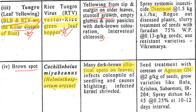Now let's talk about brown spot, caused by Helminthosporium oryzae. The important identification feature is elliptical spots. Agro-san is not a preferred method. You can use resistant varieties like Bala, Krishna, and Sabramati. Spraying Dithane M45 gives very good control.